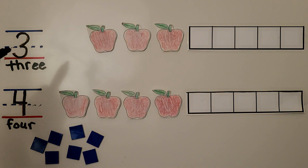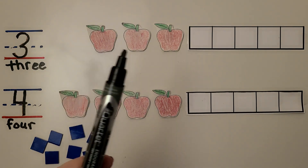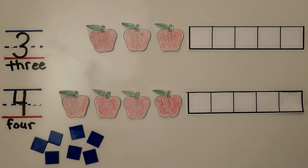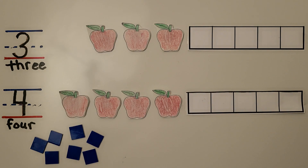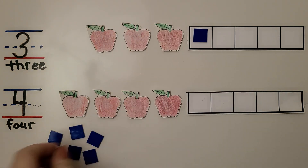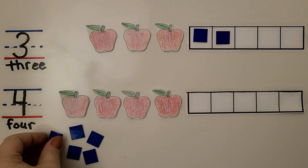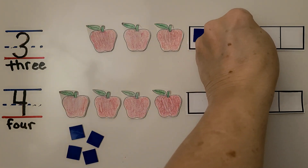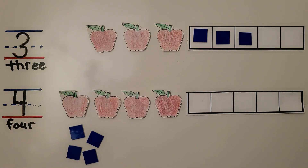Here we have the number 3 and the word 3. We can count 1, 2, 3 apples. We can put a counter into the 5-frame for each apple — 1, 2, 3 counters for 1, 2, 3 apples.